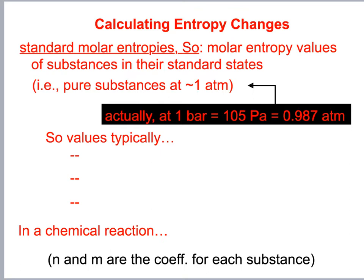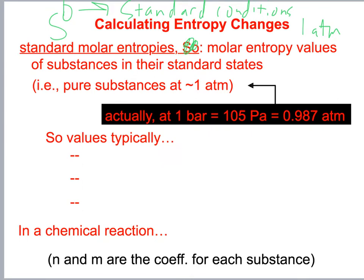Now let's get into calculations. We need to calculate standard molar entropies — S-naught, where naught means standard conditions: around one atmosphere and 25°C. These values are typically not zero; they increase with increasing molar mass.